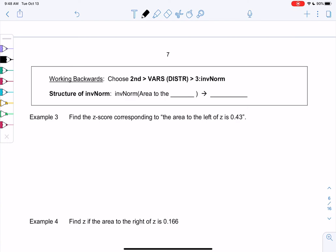So working backwards. We'll do the calculator in a second, but it's in the same menu. But we're going to go down to inverse norm. Inverse for kind of a backwards function. So the structure of this function is you do inverse norm. You always do area to the left. It's just the way the formula is written. And it'll output a z-score. So we use this when we have area or percents.